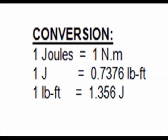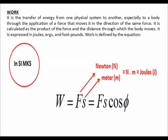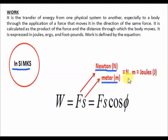These are the conversion data that you will be needing in answering some problems about work. Now let us derive the units for work. In SI/MKS units, the unit for force F should be in newtons, denoted as capital letter N, and the distance S should be in meters, denoted as small letter m. Newton multiplied by meter is equivalent to joules, which is denoted as capital letter J.